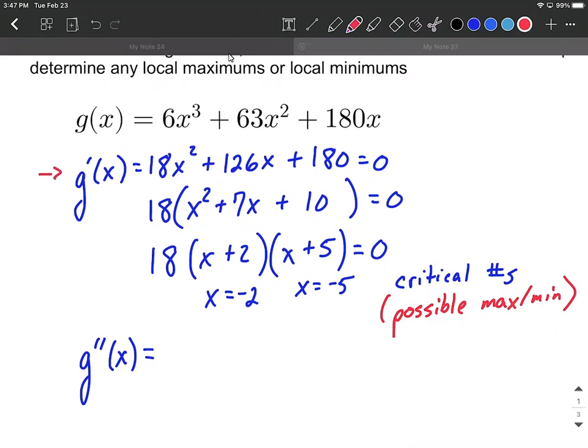What we can do is take the second derivative by using the power rule. So bring the 2 down in front, multiply it by the 18, so that'll give us 36x to the first power, reduce the exponent by 1. And then the derivative of 126x is just going to be 126. That's a linear term. And the derivative of 180 is going to be 0, because it's a constant.